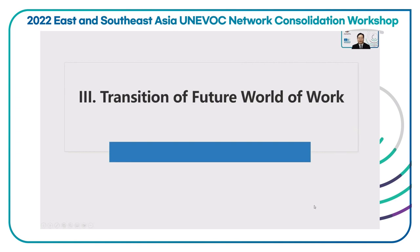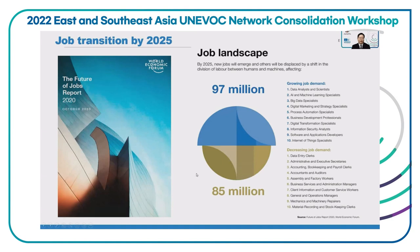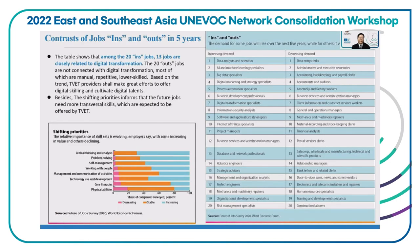Now let's see the transition of the future world of work. Based on the World Economic Forum, by 2025, 97 million new jobs will emerge, while at the same time, 85 million jobs will be displaced. Looking at the contrast of jobs ins and outs in the next five years: ins refer to increasing demand — there are 20 of them — and outs refer to decreasing demand, also 20. Among the 20 in-demand jobs, certain jobs are closely related to digital transformation, while the 20 out-demand jobs are not connected with digital transformation. Most of them are manual, repetitive, and lower-skilled.